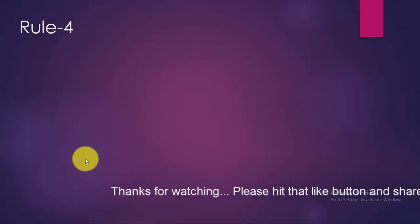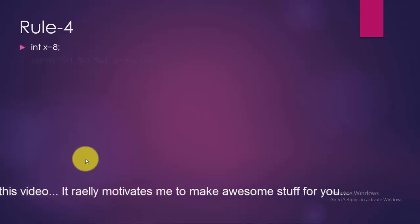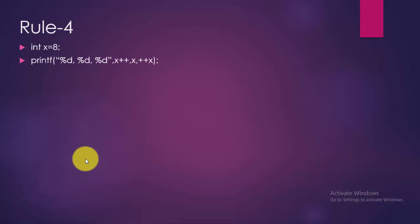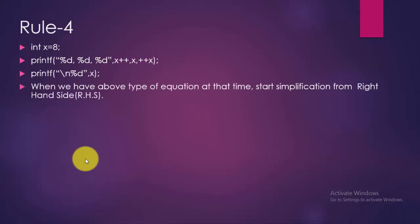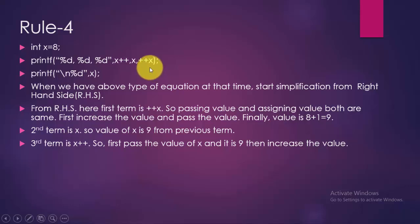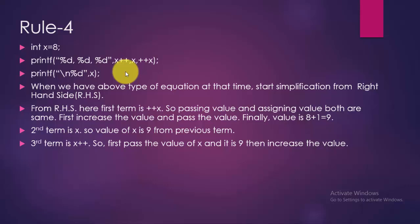Rule number 4. We have an integer variable x = 8. Our program is: printf("%d %d %d", x++, x, ++x); then printf("%d", x). When we have this type of statement, start simplification from the right-hand side. From RHS, the first term is ++x: increase x first and pass the value, so x becomes 9 and value passed is 9. Second term is x: value of x is 9 from previous step, so 9 is passed. Third term is x++: first pass the value 9, then increase x to 10. So our output is 9 9 9 and 10 on a new line.